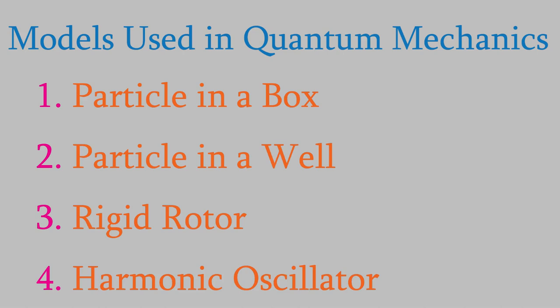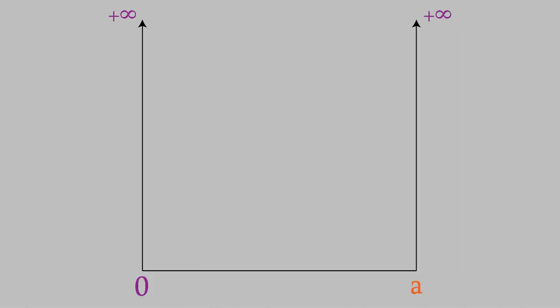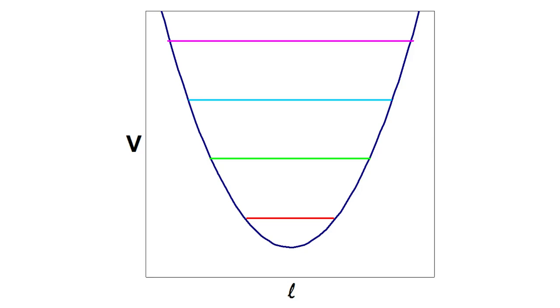Those models were all great ways to help us think about the basic principles of quantum mechanics and see how they affect the real behaviors of chemical systems. But all those models had one thing in common. They were all idealized situations. For example, in reality, there's no such thing as an infinitely high potential energy, like the one in the particle in a box. And the potential energy in a real vibrating molecule isn't shaped like a parabola, as in the harmonic oscillator model.